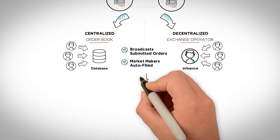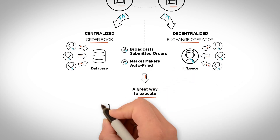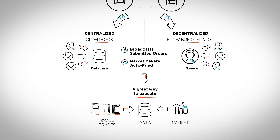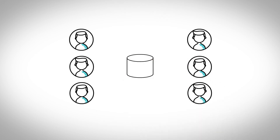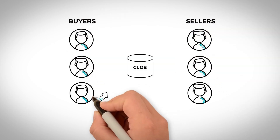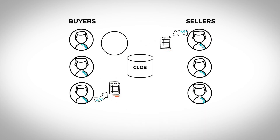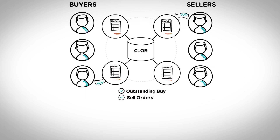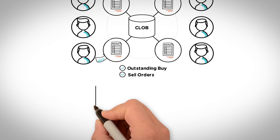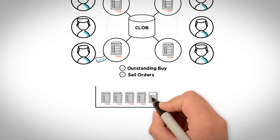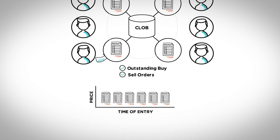Essentially, a CLOB is a great way to execute a large number of smaller trades, generating data the entire market can use when pricing. Most exchanges around the world use a central limit order book. In a typical market, buyers and sellers must submit orders to a central limit order book, which collates all outstanding buy and sell orders. Outstanding offers to buy or sell are stored in a queue and filled in a priority sequence by price and time of entry.